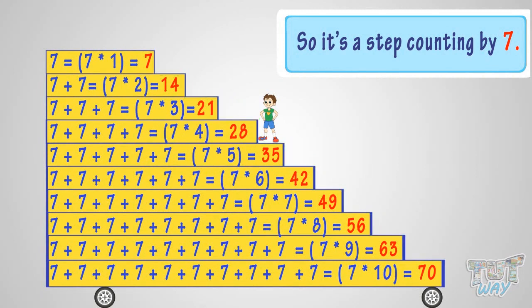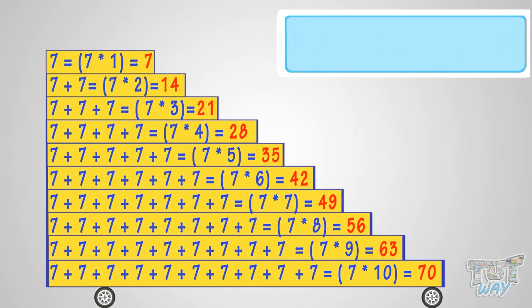So, let's revise what we have learned. 7 times 1, 7. 7 times 2, 14. 7 times 3, 21. 7 times 4, 28. 7 times 5, 35. 7 times 6, 42. 7 times 7, 49. 7 times 8, 56. 7 times 9, 63. 7 times 10, 70.